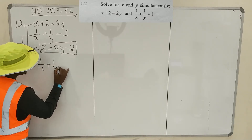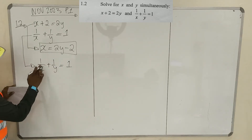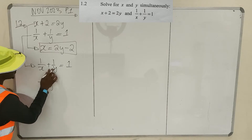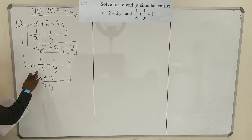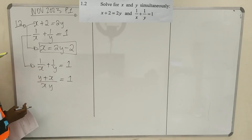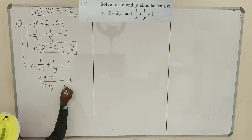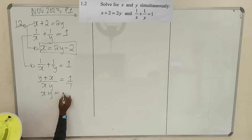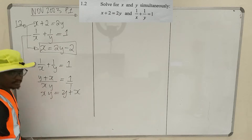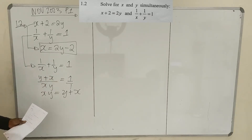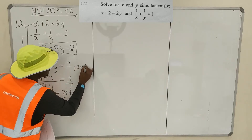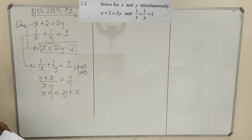We have 1/x + 1/y = 1. Adding these fractions: (y + x)/(xy) = 1, so xy = y + x. Keep in mind throughout that x ≠ 0 and y ≠ 0, since you can't divide by zero. Now we have two clean equations: x = 2y - 2, and xy = x + y.